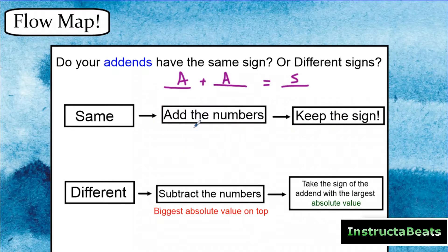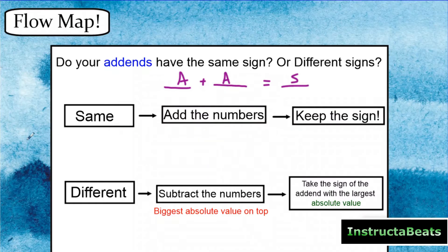If the signs are different — one is negative and one is positive — you're going to subtract the numbers by putting the number with the biggest absolute value on top. Then you take the sign of that number with the largest absolute value and put it on your answer. Two very simple things to do: ask yourself the first question and then follow your flow map.